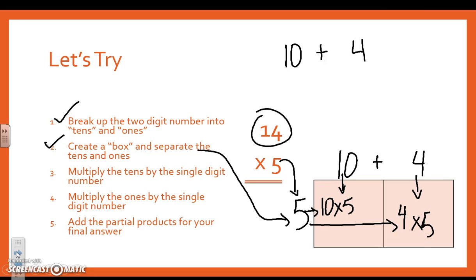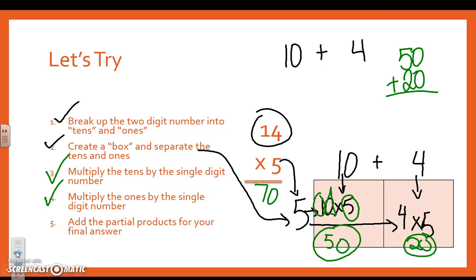Now I'm going to do 10 times 5. I'm going to use my circle and triangle strategy. My basic fact is 1 times 5. 1 times 5 is 5. And I have one more 0. And I'm going to add that 0. Then I'm going to simply do 4 times 5, which is 20. So I multiply the tens by the single-digit number. And I multiply the ones by the single-digit number. The last thing I need to do is add the partial products. The partial products are the numbers inside the box that you multiplied. They're part of the product. So I'm going to do 50 plus 20. And that's going to be 70. So 14 times 5 is 70.